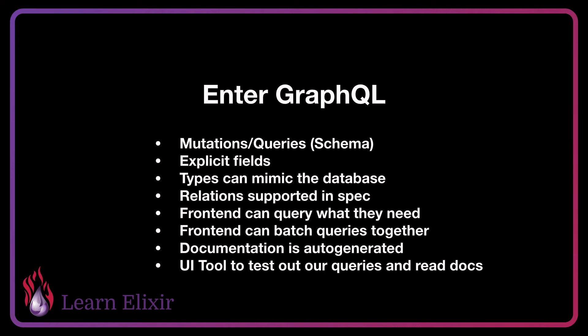GraphQL really solves this problem in multiple ways. One, our documentation is actually auto-generated for us with GraphQL, so we don't have to take care of documentation for the frontend to read the spec — including all our schemas with mutations and queries, as well as all the return types and the arguments. The frontend is also able to batch queries together, as well as mutations, which allow it to specify exactly what it wants in a single request without us having to modify our code in any way whatsoever.